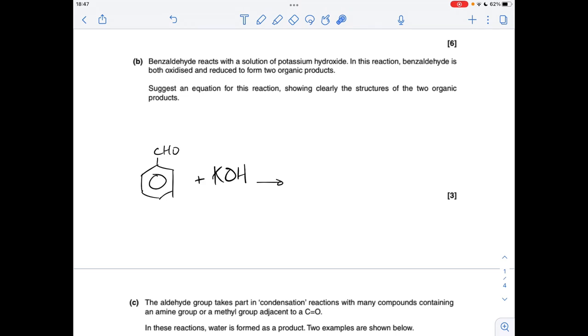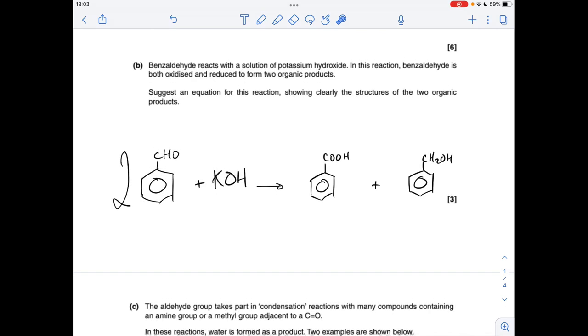When it's oxidised it becomes a carboxylic acid and when it's reduced it becomes a primary alcohol. Following that logic gets us these two products. However, we've got potassium ions from the KOH, so instead of getting the benzoic acid this H+ would be replaced by K+, so we actually get the potassium salt of the benzoic acid.